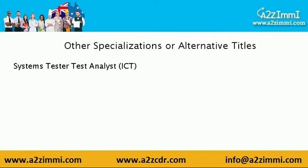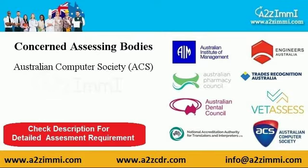The other designations through which you can apply under this unit code are Systems Tester and Test Analyst. To file for general skilled migration under the profile of an ICT Systems Test Engineer, you have to make your profile assessed from Australian Computer Society, ACS. To know detailed assessment requirements, find the link given in the video description.